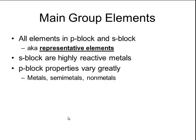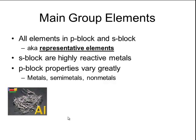Moving across period 3 in the p block, we begin with aluminum, which is a metal with all the properties of a metal — being malleable, ductile, and a good conductor of electricity and heat. The next element is silicon, which is a semi-metal. It still looks like a metal in that it's lustrous and silvery, but is not as good a conductor and is considered a semiconductor, which makes it very popular for use in computers.